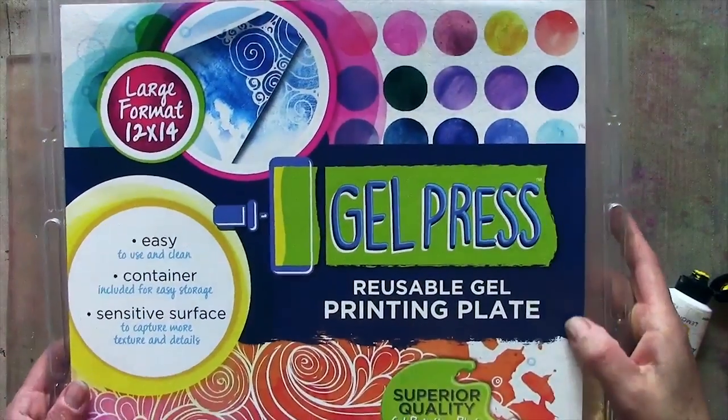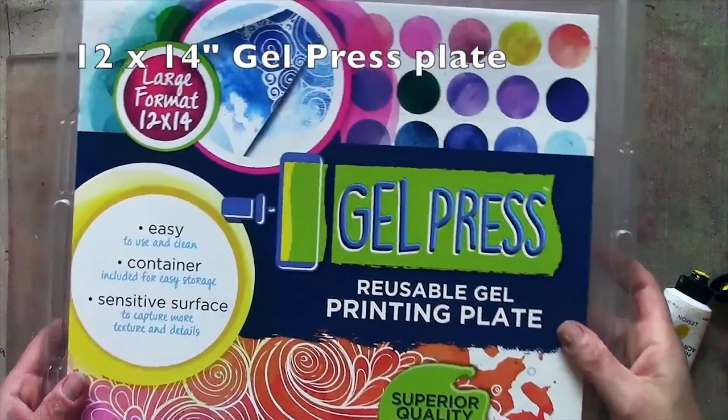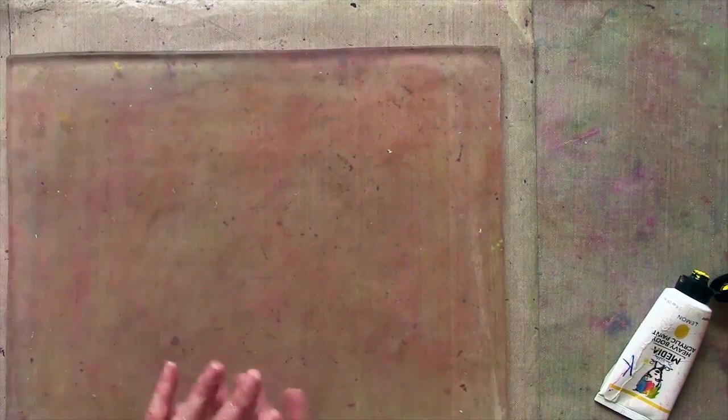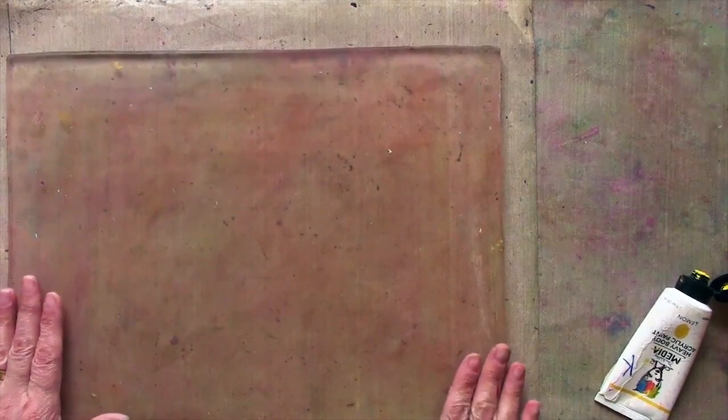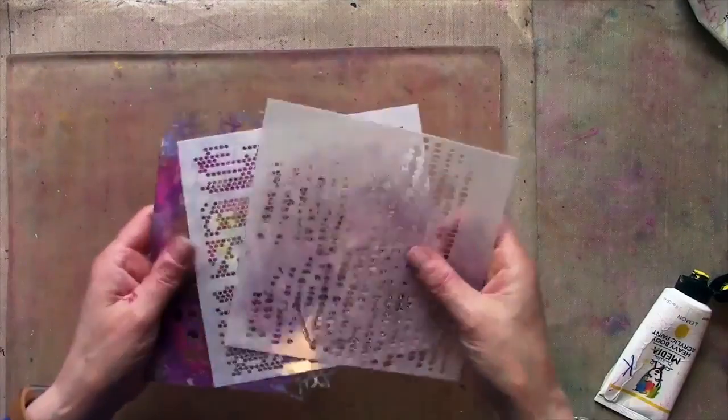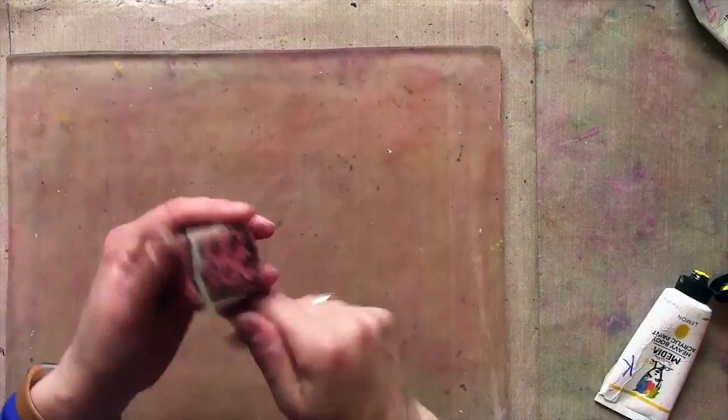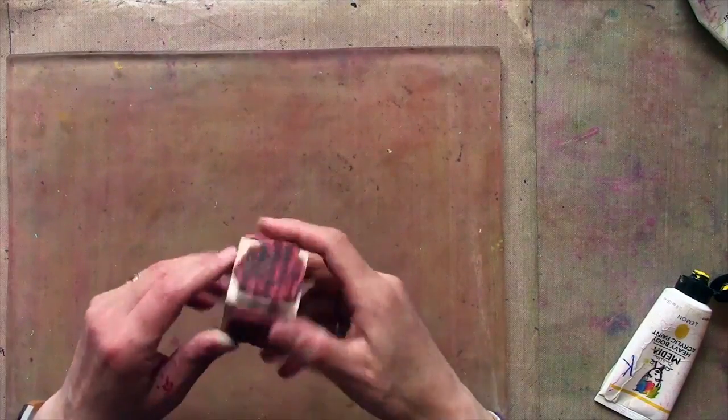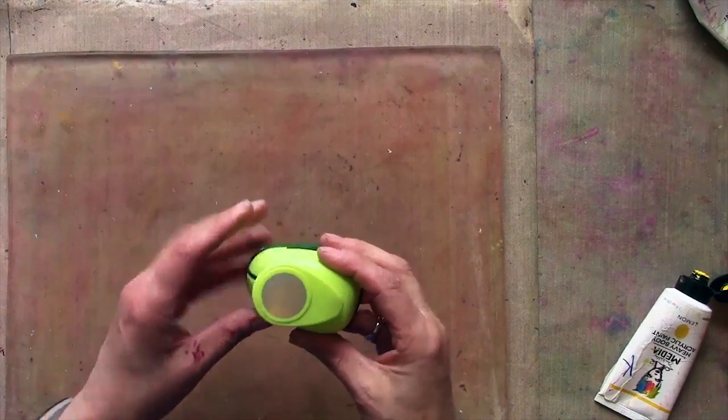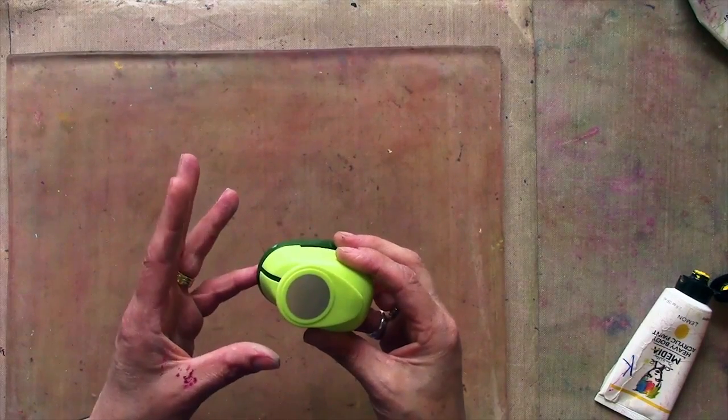I'm going to be working on my large 12x14 gel press plate. I could work on a smaller one. You'll see, because I don't really ever use the whole size. I've picked out a few stencils at the ready, just for a bit of pattern. I've got a couple of texture stamps at the ready. I might also use some paper punches. This will make masks that I can use on my backgrounds.